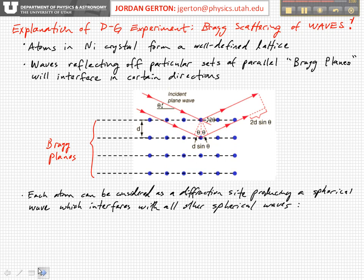In this picture, each atom can be considered a diffraction site, which is going to scatter the incoming radiation — the incoming waves — as spherical waves, much like a slit did in the double-slit experiment in the previous lecture. In particular directions, you're going to get interference between the spherical waves scattered from the different points, and in those directions you can have constructive interference that causes the intensity of that wave to be larger.